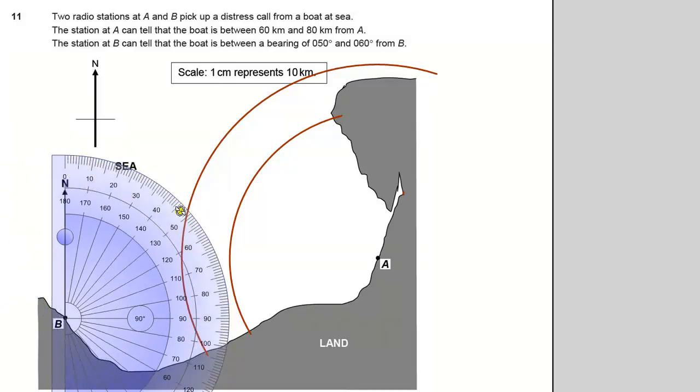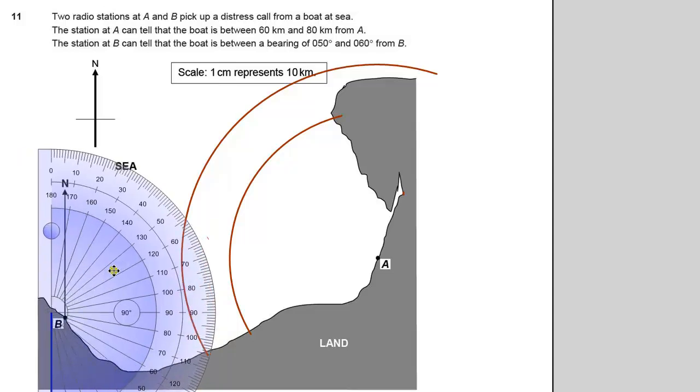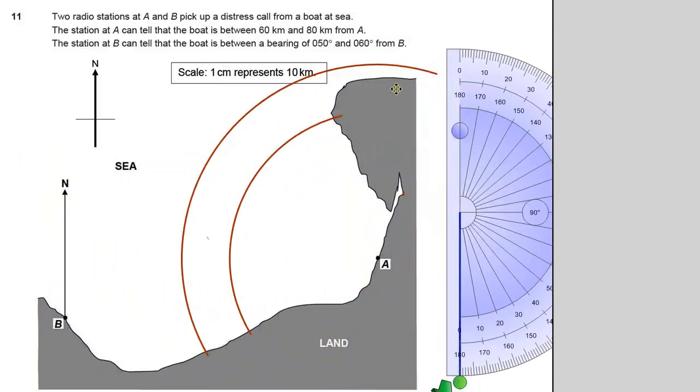And we want 60 degrees, which is there. So we'll just put a little mark on 60. Okay, there's my 60 degrees. And then I need to draw a line on that bearing. So that's 60 degrees through that point. Okay, so that's 60.